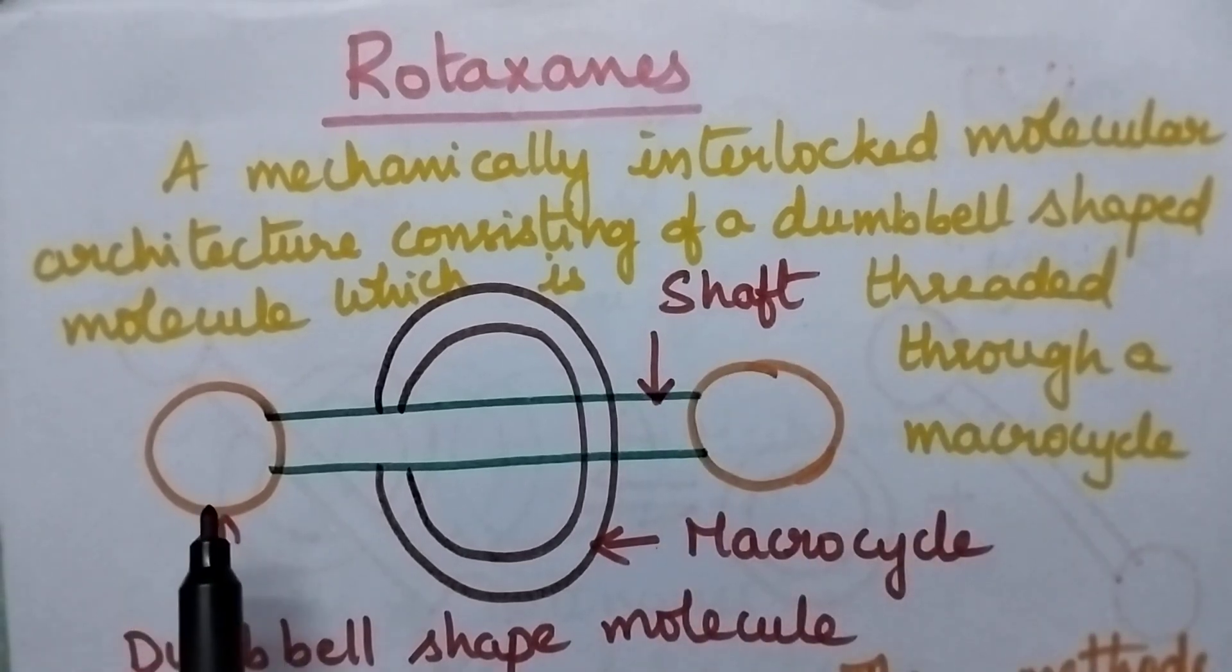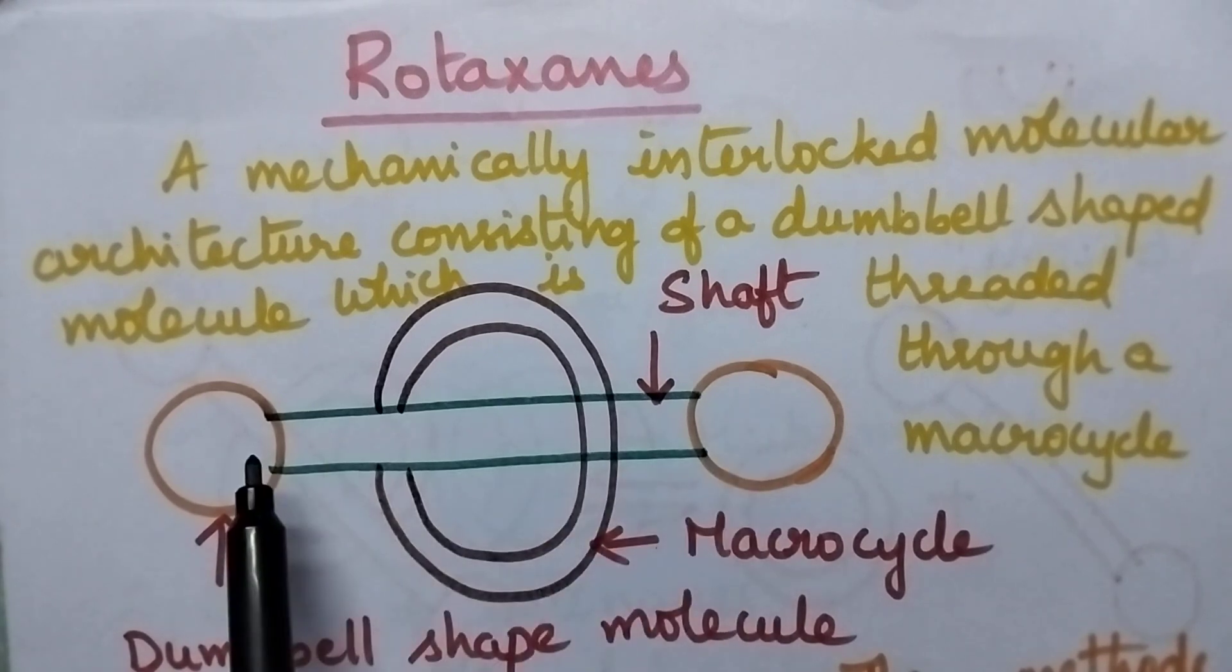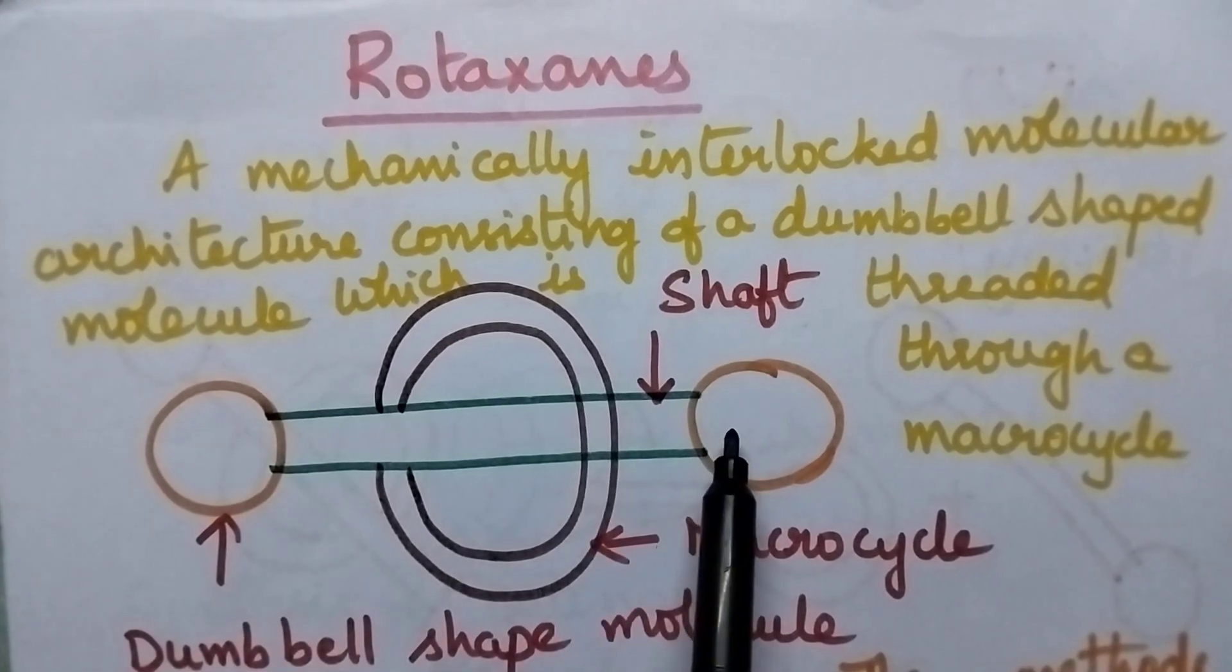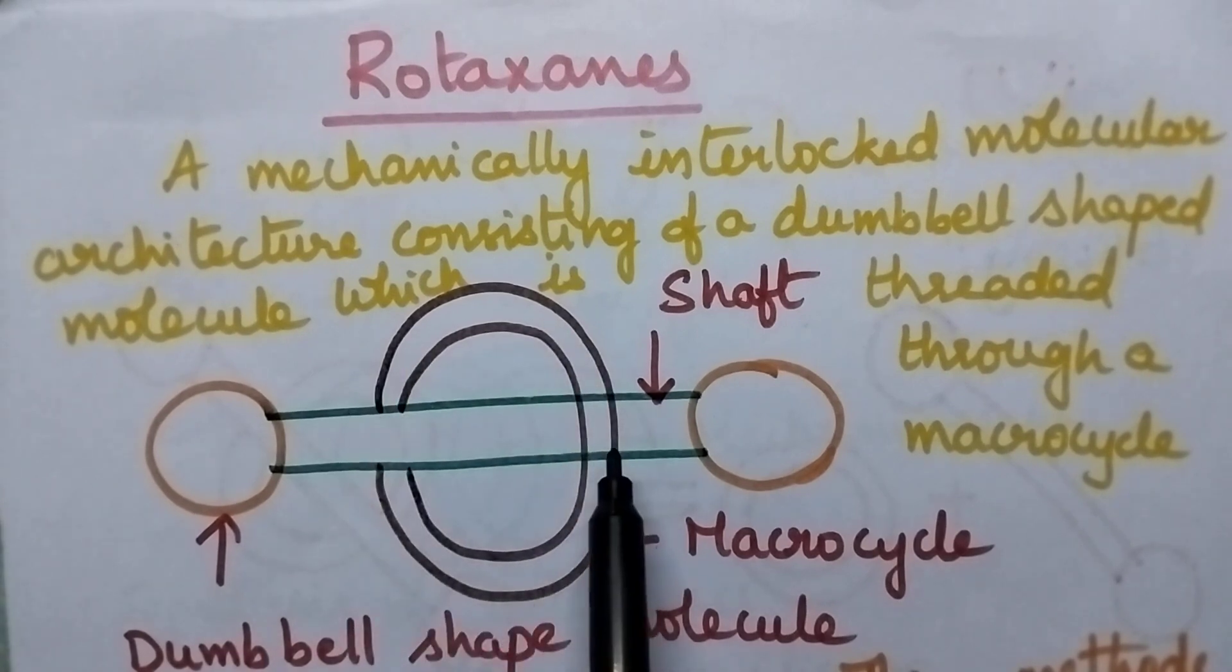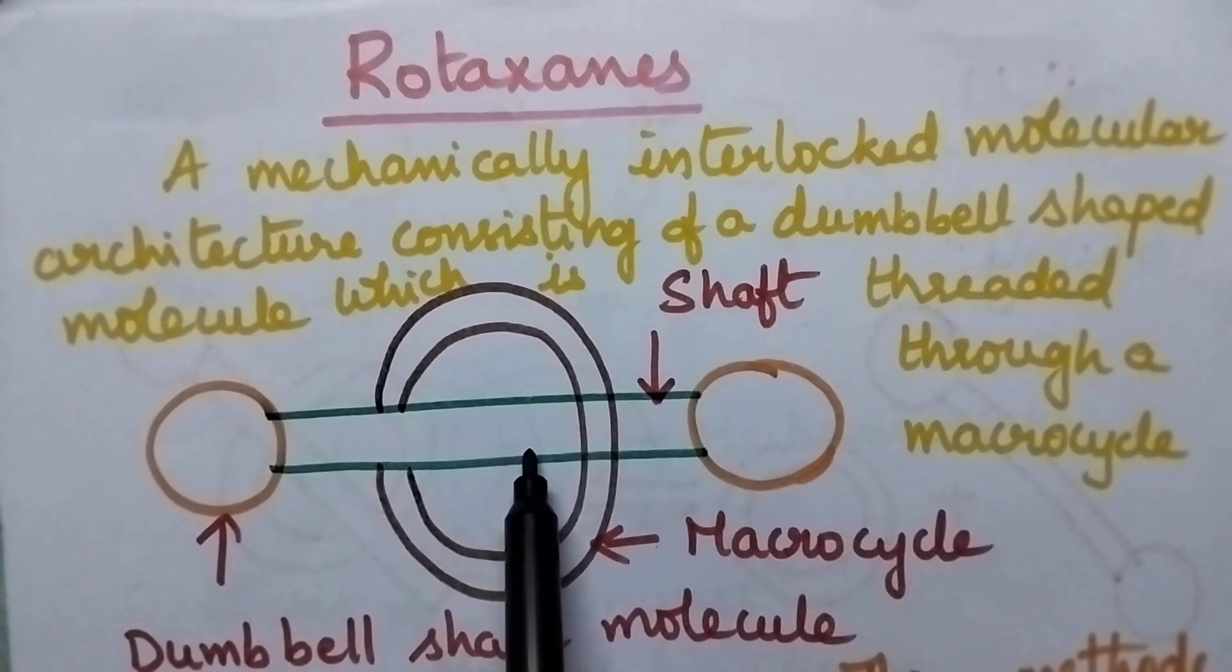Simply, a rotaxane consists of a dumbbell-shaped molecule into which a macrocycle is threaded with the help of the shaft.